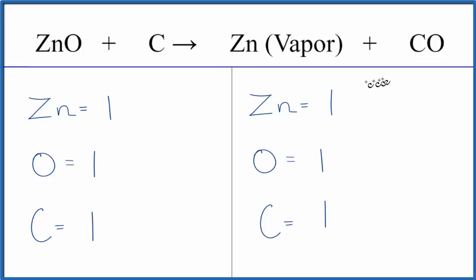This is Dr. B with zinc oxide plus carbon, ZnO plus C, which is giving us this zinc vapor, which is kind of neat, and carbon monoxide. Thanks for watching.